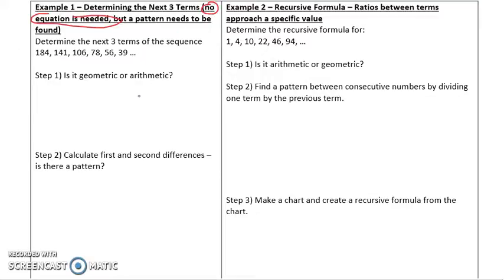The first thing we ask ourselves, is it geometric or arithmetic? Remember, if it's geometric, it's going to have a later term divided by a previous term. In this case, we would say 141 divided by 184, and we would find that to be approximately equal to 0.7663. Then we check the next term, T3 divided by T2. That's 106 divided by 141, which gives us approximately 0.7518. Those are close, but not the same. Therefore, it's not geometric.